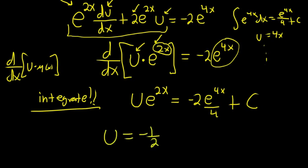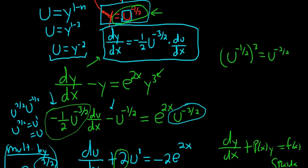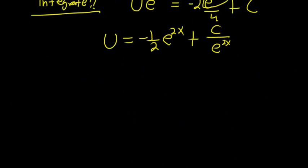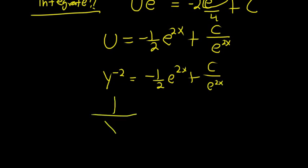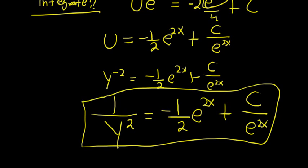We're almost done — we just need to back-substitute. Scrolling up, we see that u equals y to the negative 2. Replacing u with y to the negative 2: y to the negative 2 equals negative one-half · e^(2x) plus C over e^(2x). Since y to the negative 2 equals 1 over y squared, we have 1/y² equals negative one-half · e^(2x) plus C/e^(2x). That is the solution to the Bernoulli differential equation.